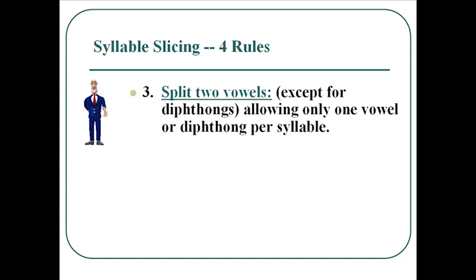Rule three is also pretty easy. It says if you see two vowels in a row, you split them, unless of course they're a diphthong. If they're a diphthong, they form a cluster of vowels making one sound. There's only one vowel or diphthong per syllable.